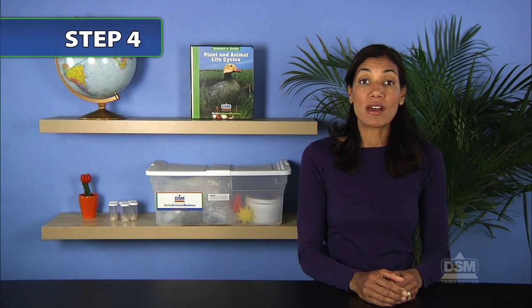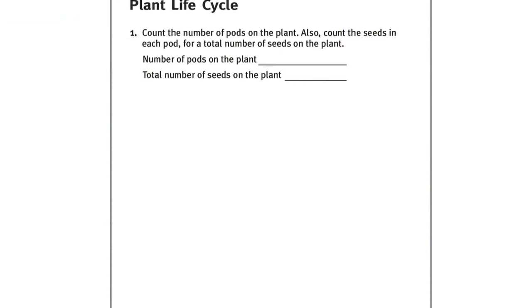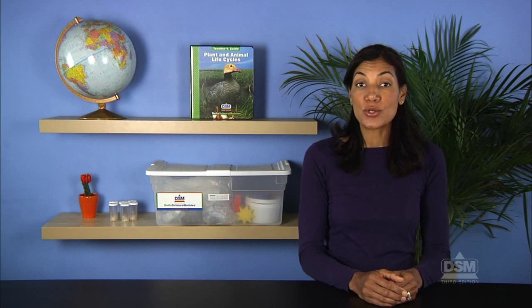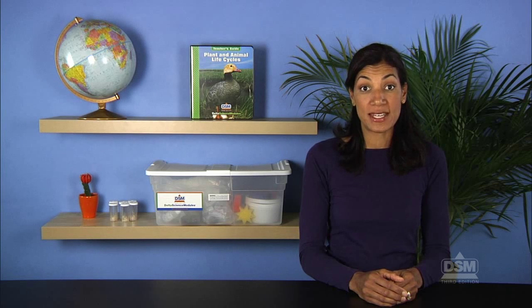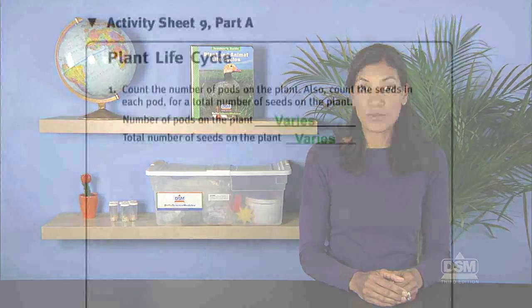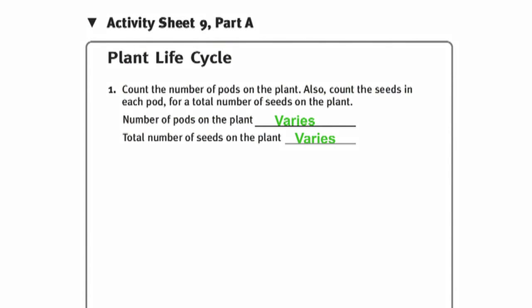Give each student a copy of activity sheet nine, part A, and instruct each student to count the number of pods on his or her plant. Then students should count the total number of peas in all of the pods and record their answers on the activity sheet.